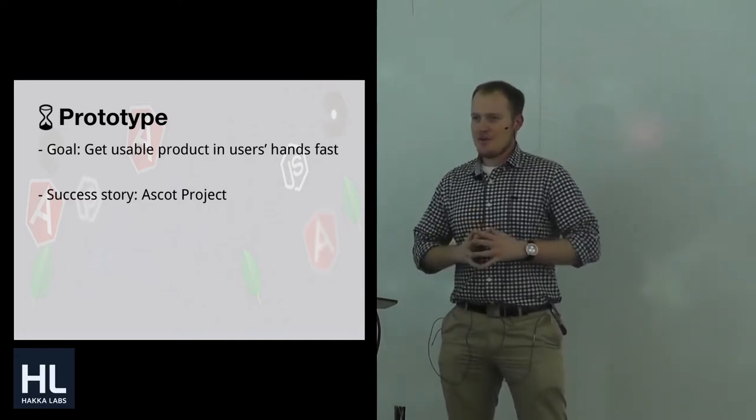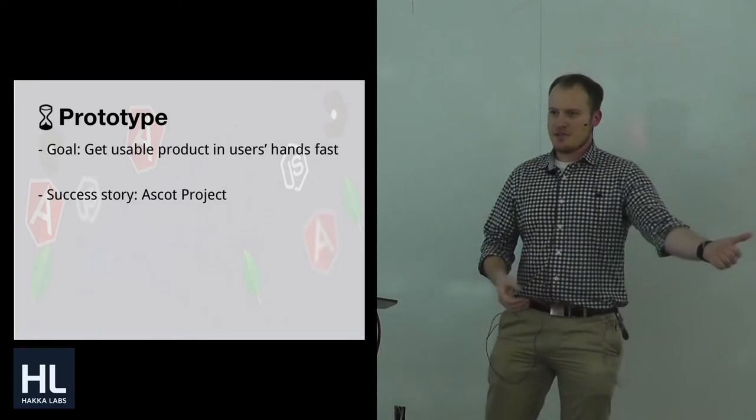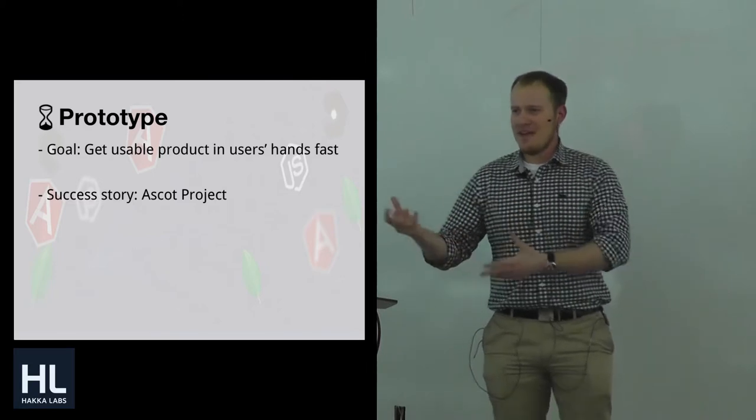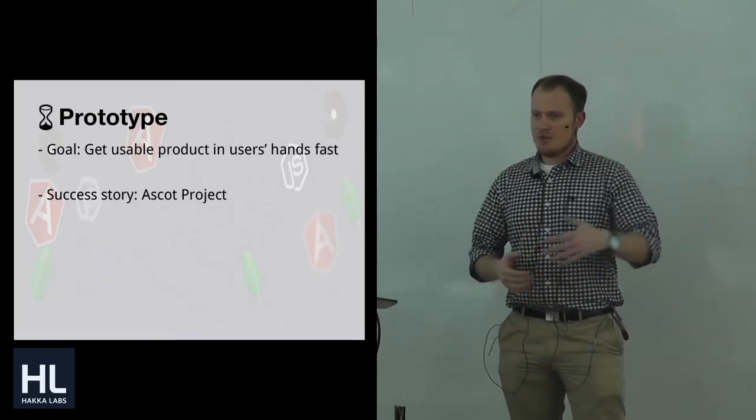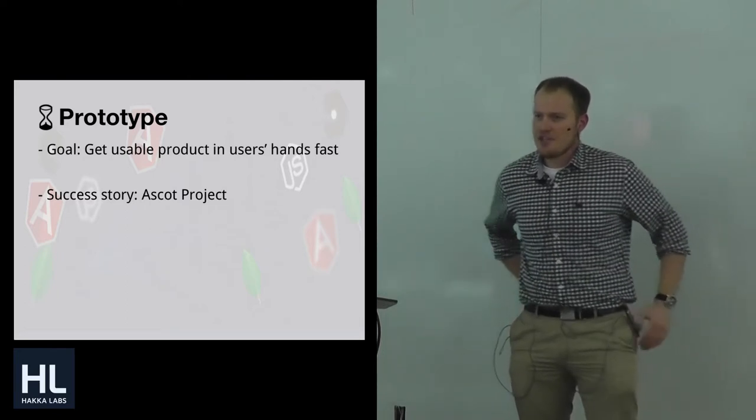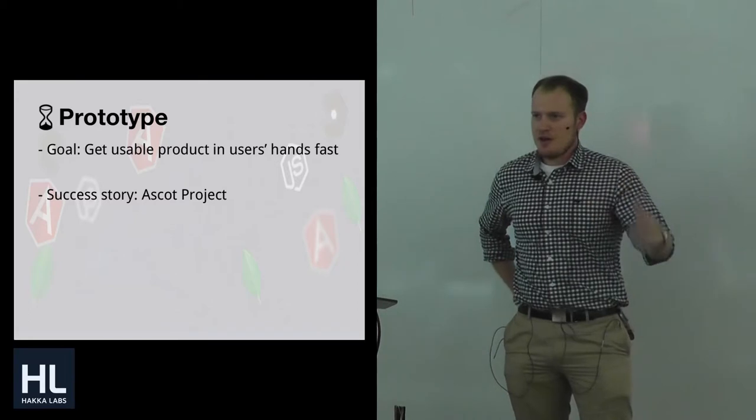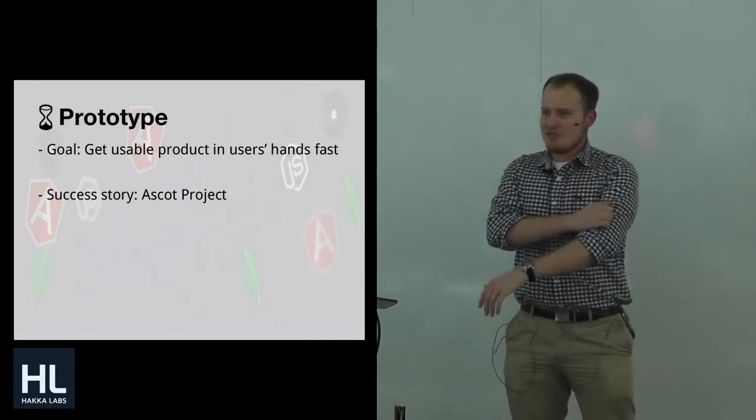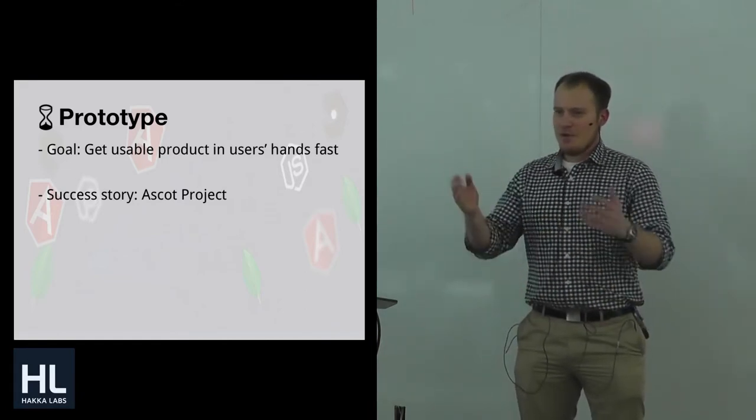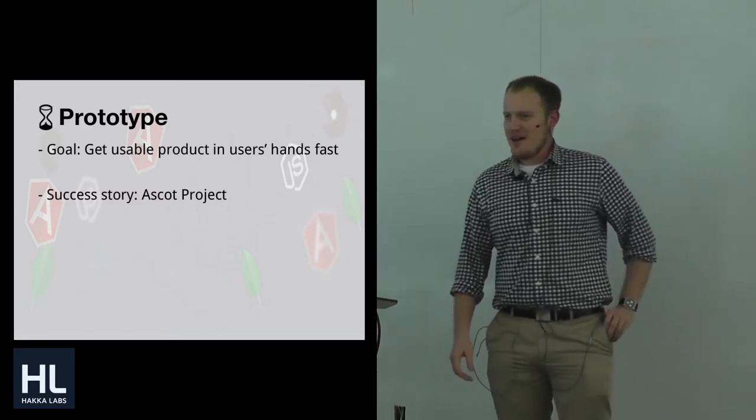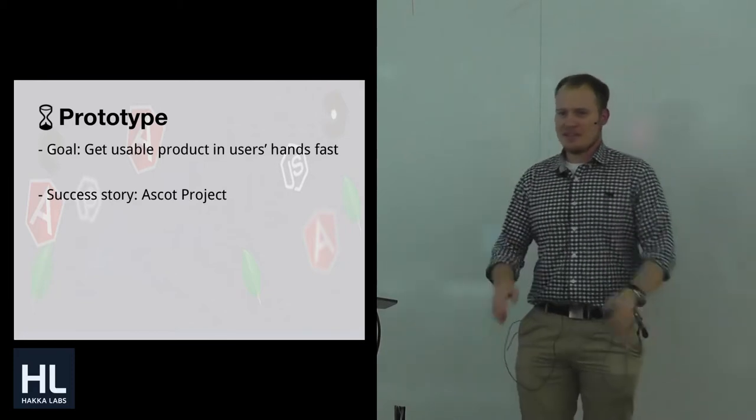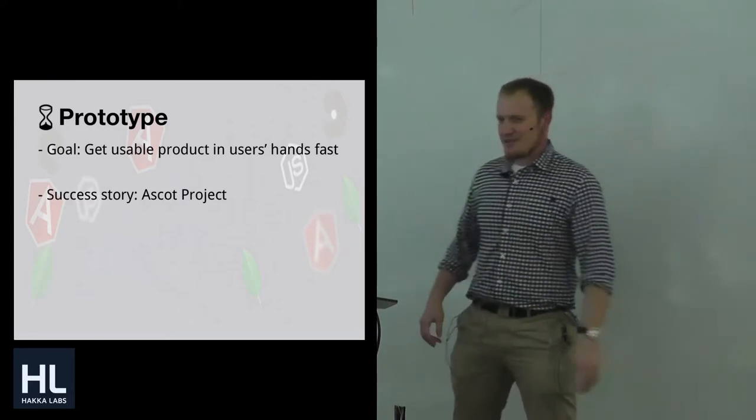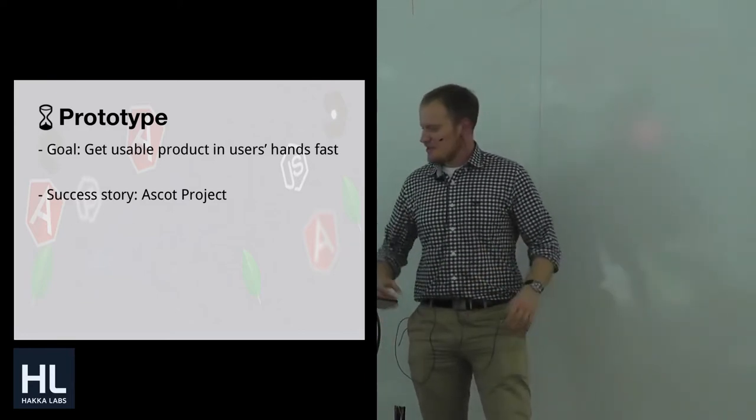Another success story with the MEAN stack was the first startup I was working on, the Ascot Project. It was a fashion tech project we built at a hackathon at AngelHack in Washington DC in 2012. We basically built the vast majority of the product in a day, released it the next week while investor interest was still hot, and started making revenue from day one. We went from not having a GitHub repo to revenue in about four days.